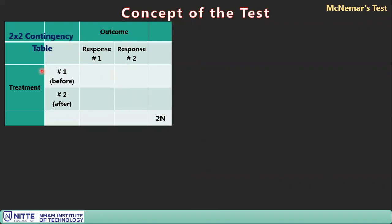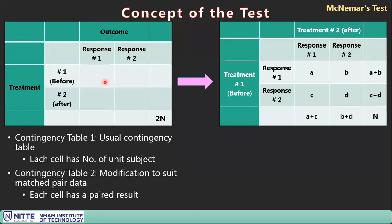For a 2×2 contingency table, you have a treatment dimension — which could be before and after, or two cohorts — and a response dimension with event present or event not present. We can modify this design so that treatment 1 and treatment 2 run row-wise and column-wise respectively.